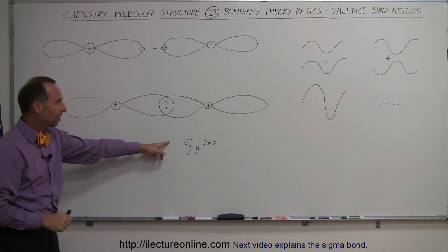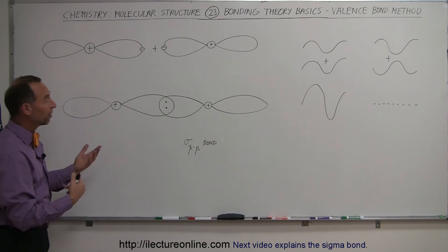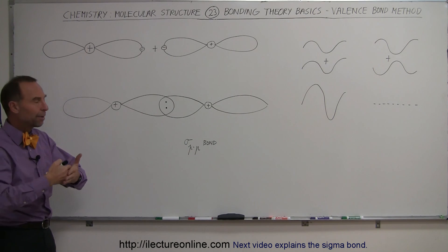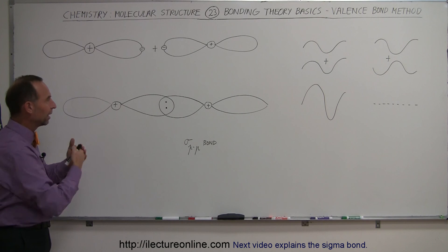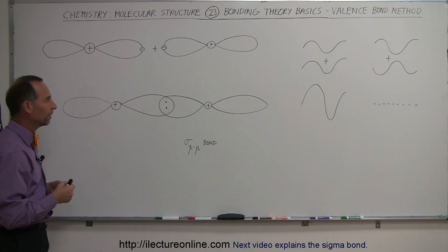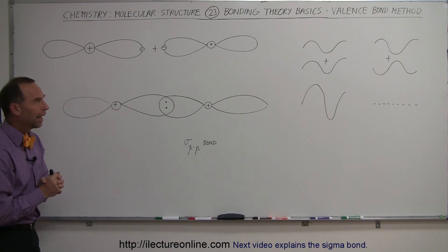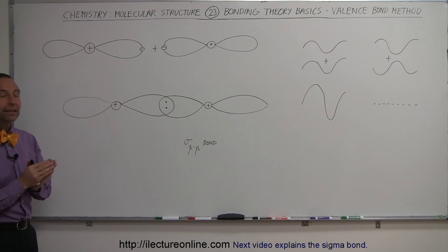and so we call that the sigma p-p bond, p for p orbitals of course, and the sigma bond is simply an overlapping bond where they're sharing electrons and where each orbital just brings in one of the two electrons to be shared. And so once we understand that we're now ready to go ahead and take a little deeper look at how electron bonding takes place and how atoms bond together.